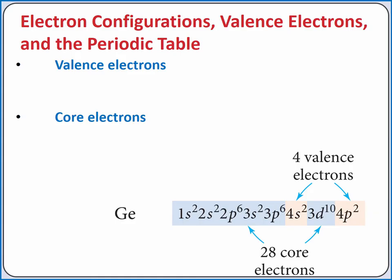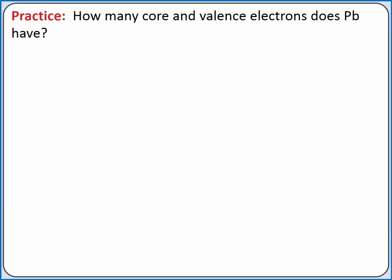along with the remaining 18 electrons in the 1s, 2s, 2p, 3s, and 3p subshells. Let's determine how many core and valence electrons lead has.